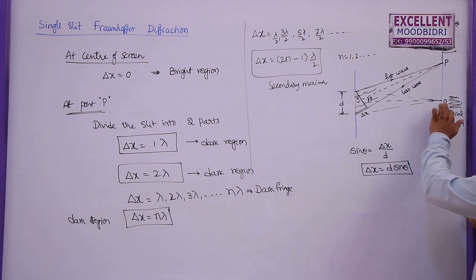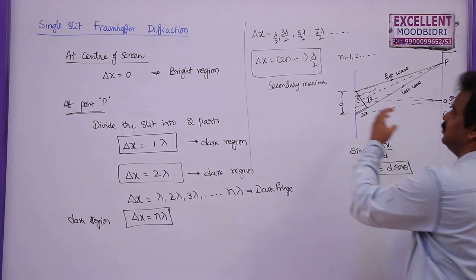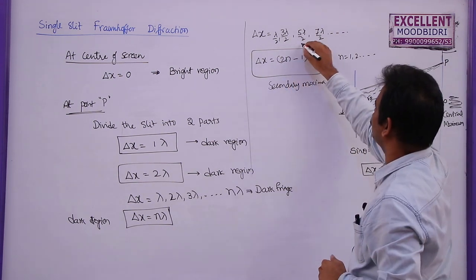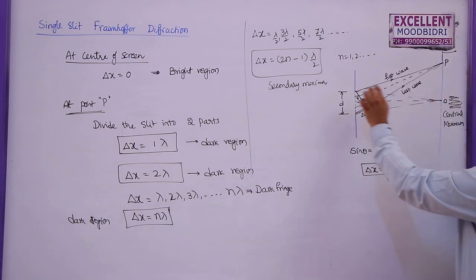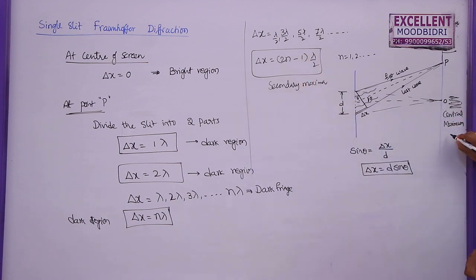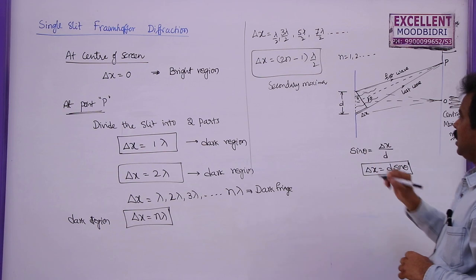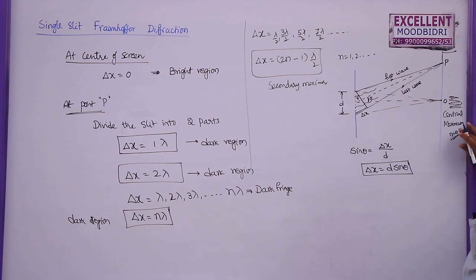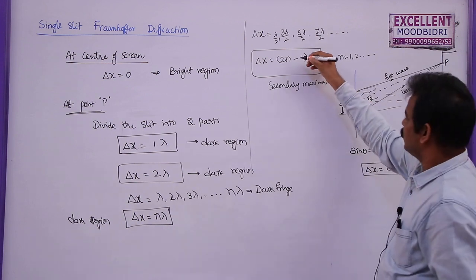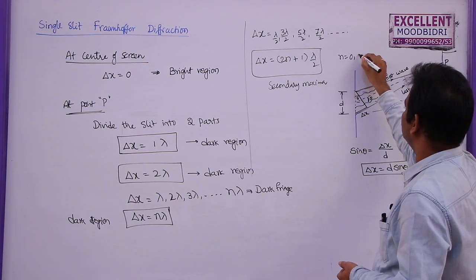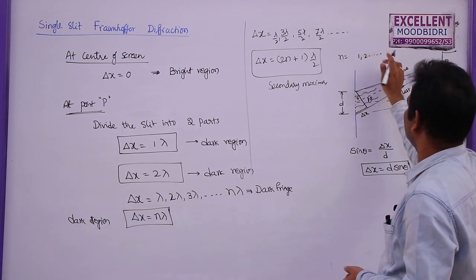The central fringe can be taken as n = 0. If you take the central maximum as n = 1, then the condition becomes delta x = (2n + 1)λ/2. In most books, taking the central maximum as n = 1, the condition is written as (2n + 1)λ/2 where n = 1, 2, 3, 4 and so on.